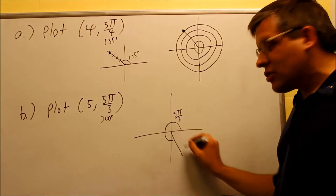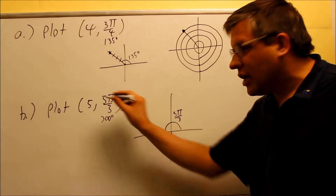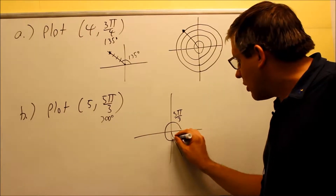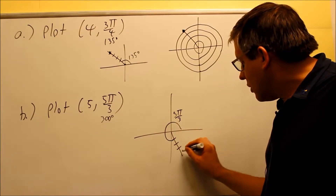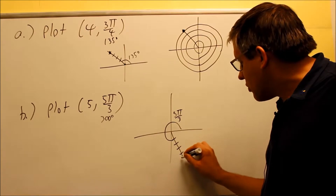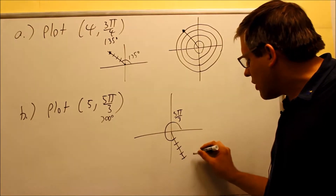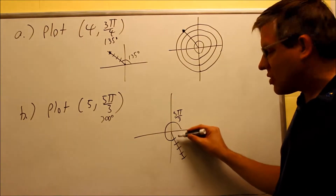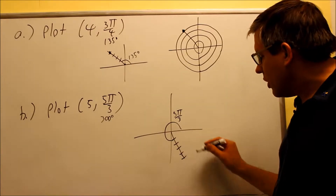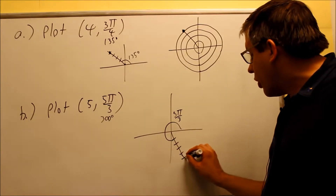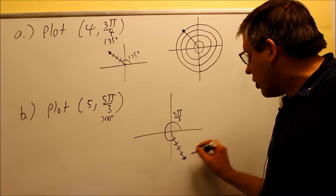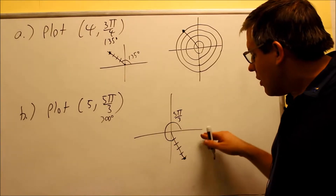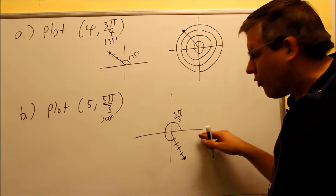Then, all I'm going to do on the line drawn here is count down five. The spacing — just try to make it even; it doesn't matter exactly what the spacing is, as long as you make it kind of the same all the way down and keep it uniform. The point will end up down below there, so I have a point drawn in the fourth quadrant.